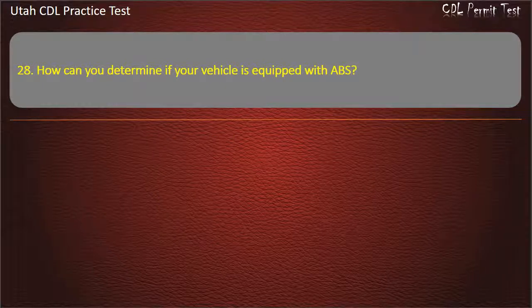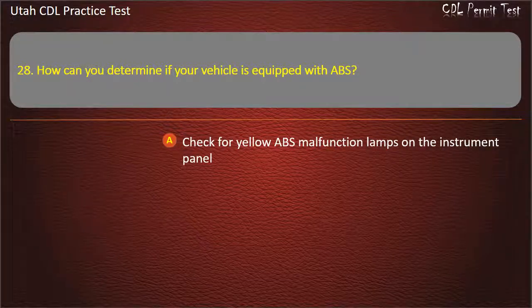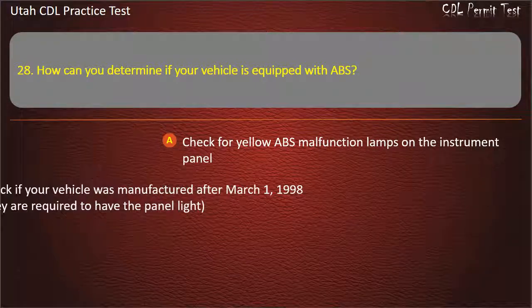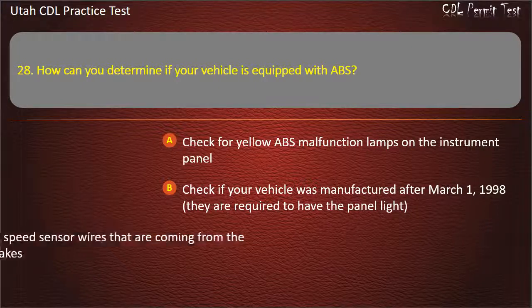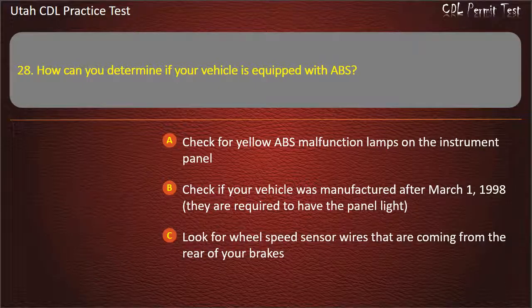Question 28. How can you determine if your vehicle is equipped with ABS? Check for yellow ABS malfunction lamps on the instrument panel. Check if your vehicle was manufactured after March 1, 1998 — they are required to have the panel light. Look for wheel speed sensor wires that are coming from the rear of your brakes. All of the above. Answer: All of the above.